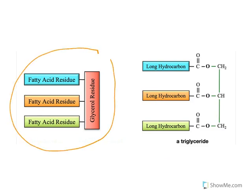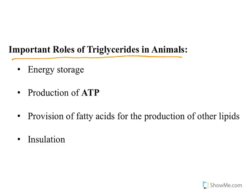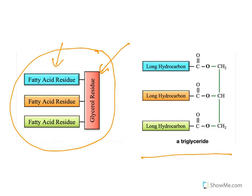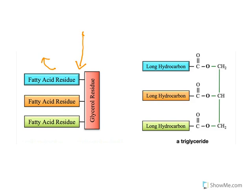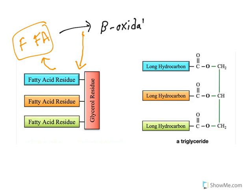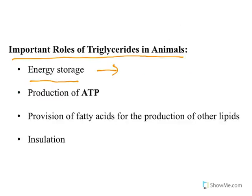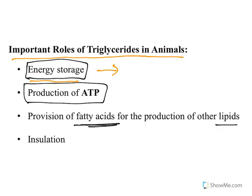This is again the depiction of a triglyceride — it has glycerol as the alcohol residue and three fatty acid residues. Now the importance of triglycerides in animals, including human beings: they are the major energy storage form. When triglycerides undergo hydrolysis they release fatty acids, which are not esterified and hence are also known as free fatty acids. These free fatty acids undergo oxidation via beta oxidation, producing acetyl-CoA, which enters the citric acid cycle and generates ATP. Triglycerides also release fatty acids for the production of other lipids.